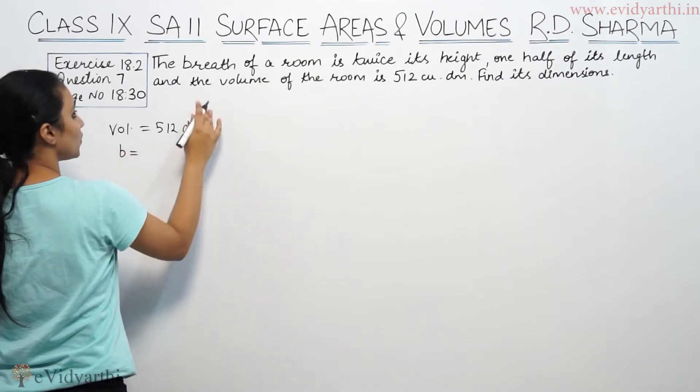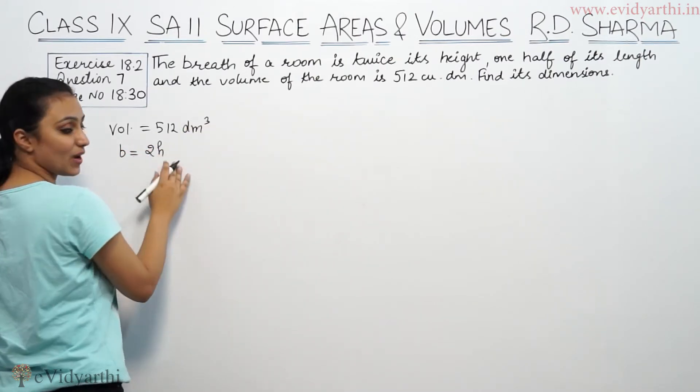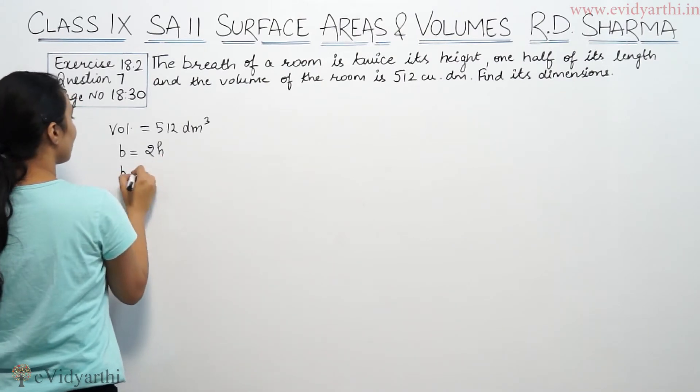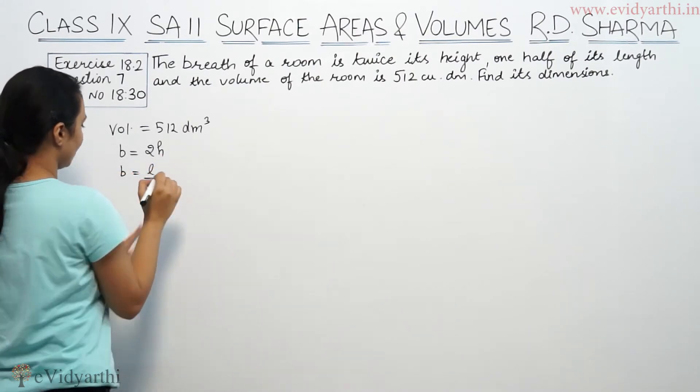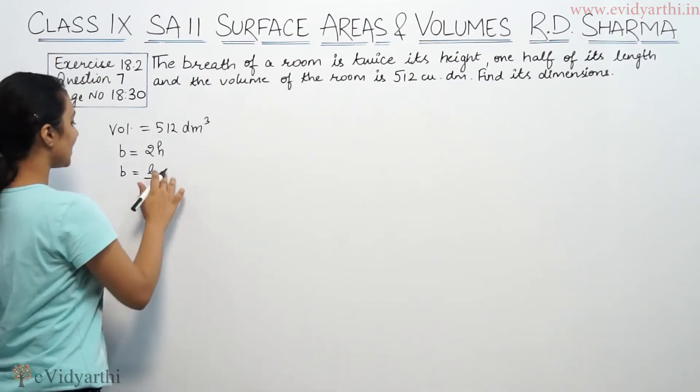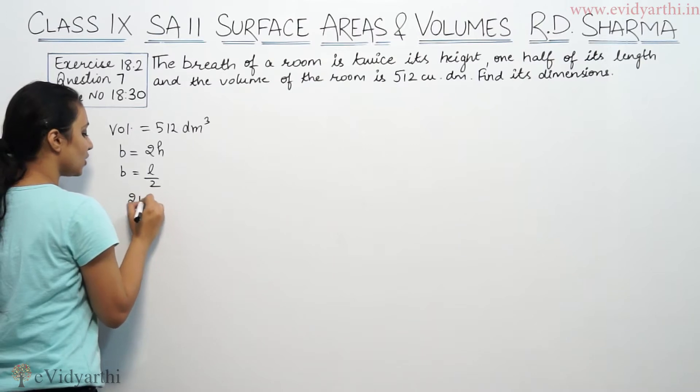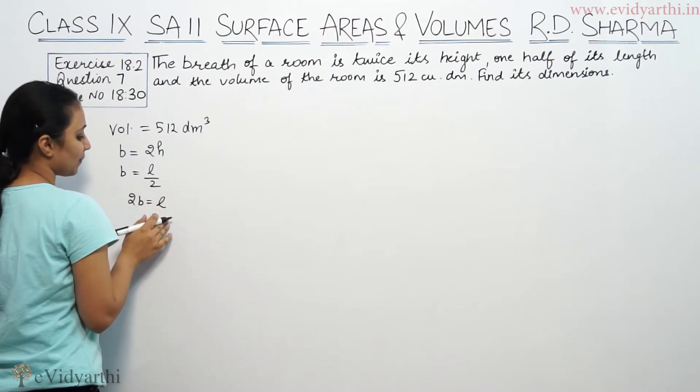Breadth is twice the height. Twice of height means 2h, and it is one half of its length. So breadth equals half of length, which means 2b will be equal to L.